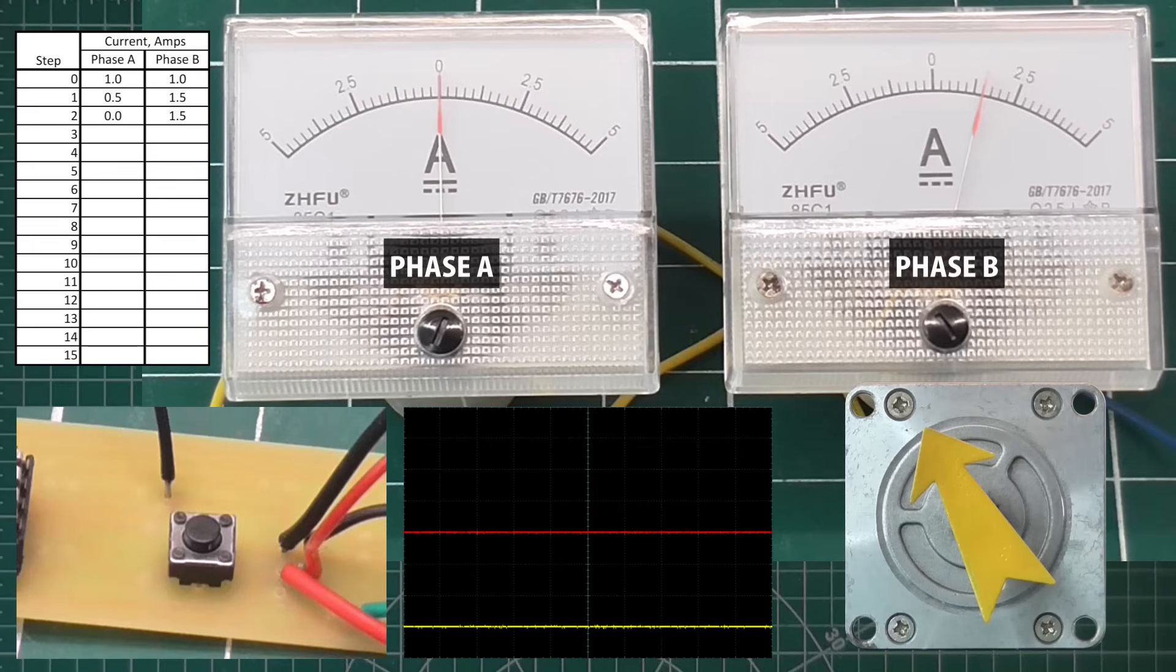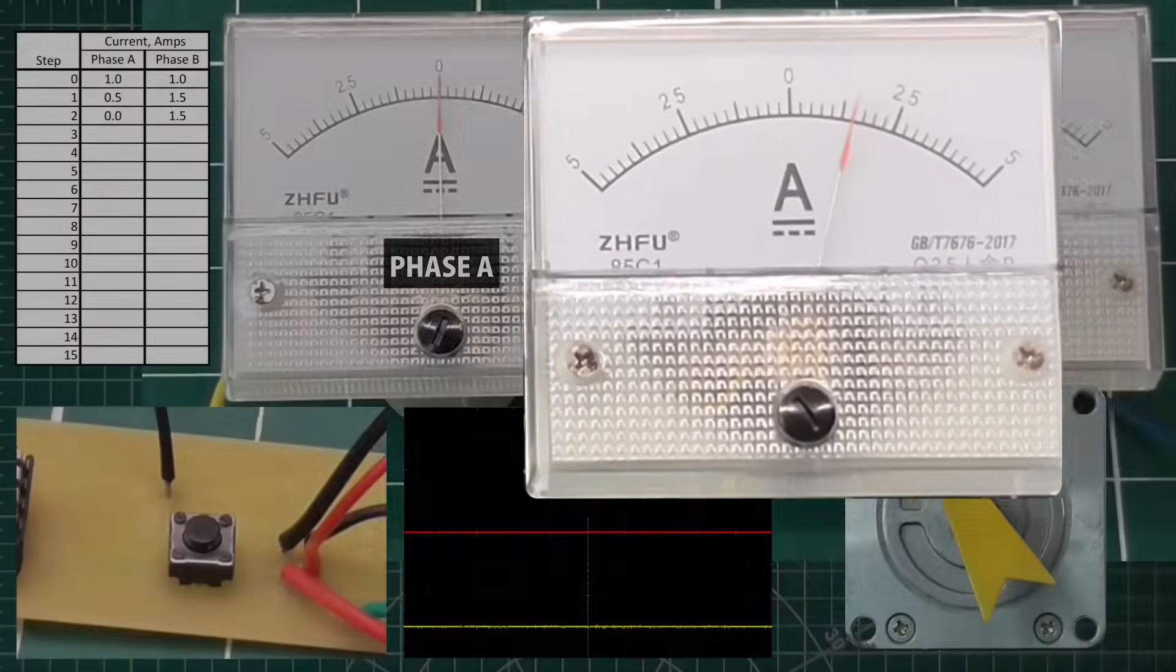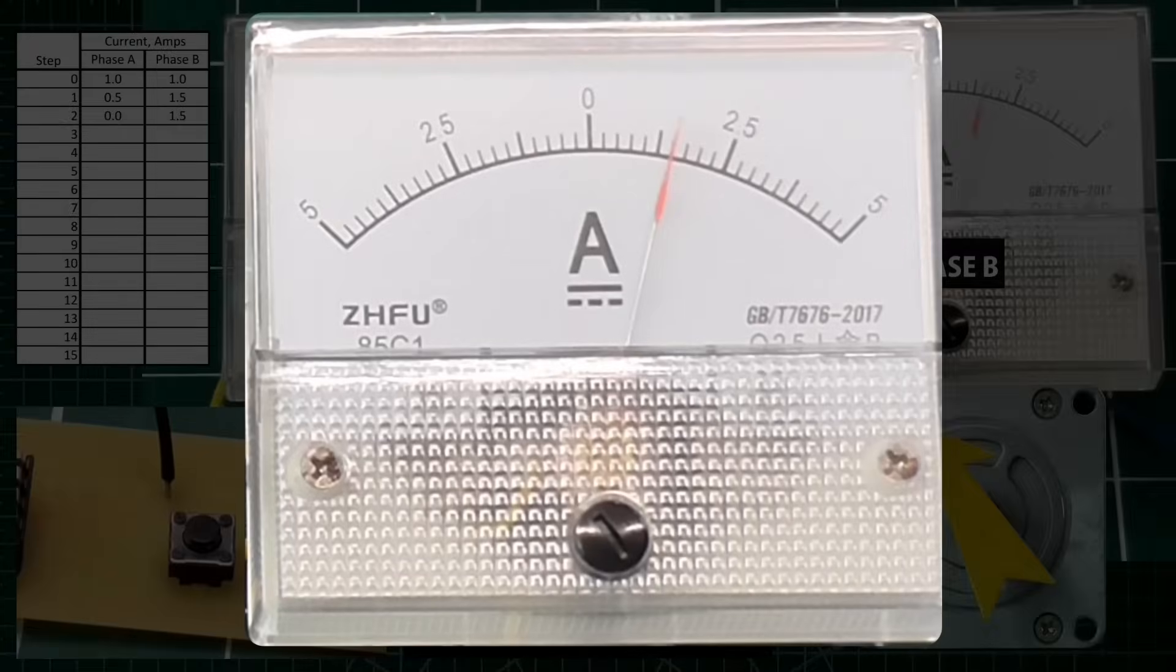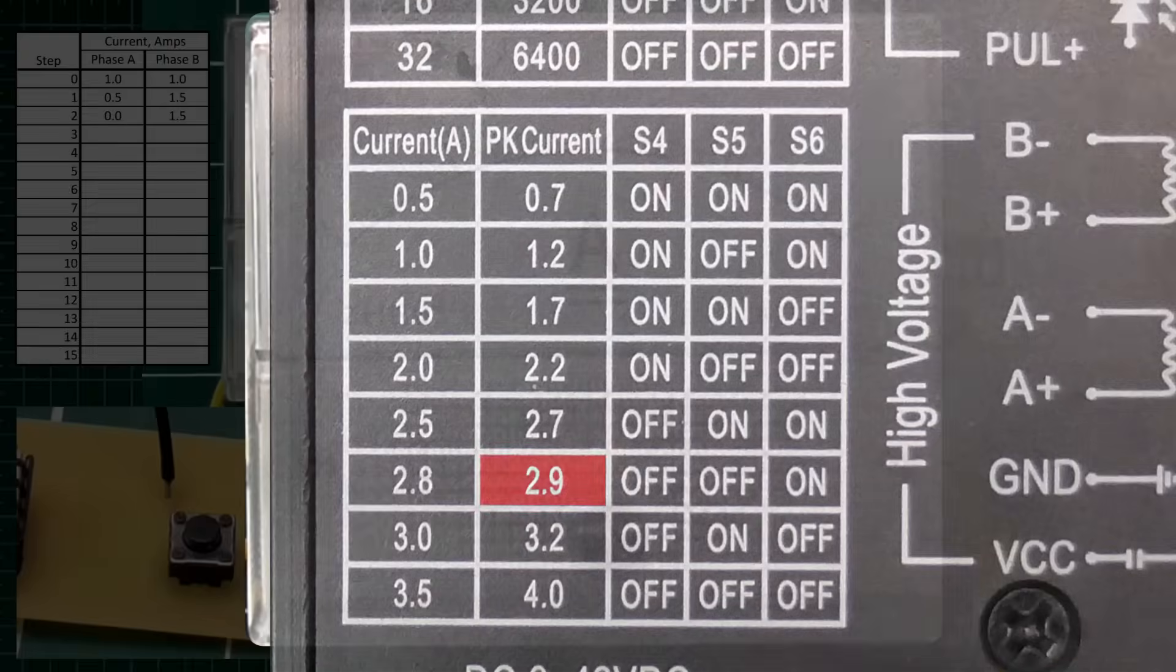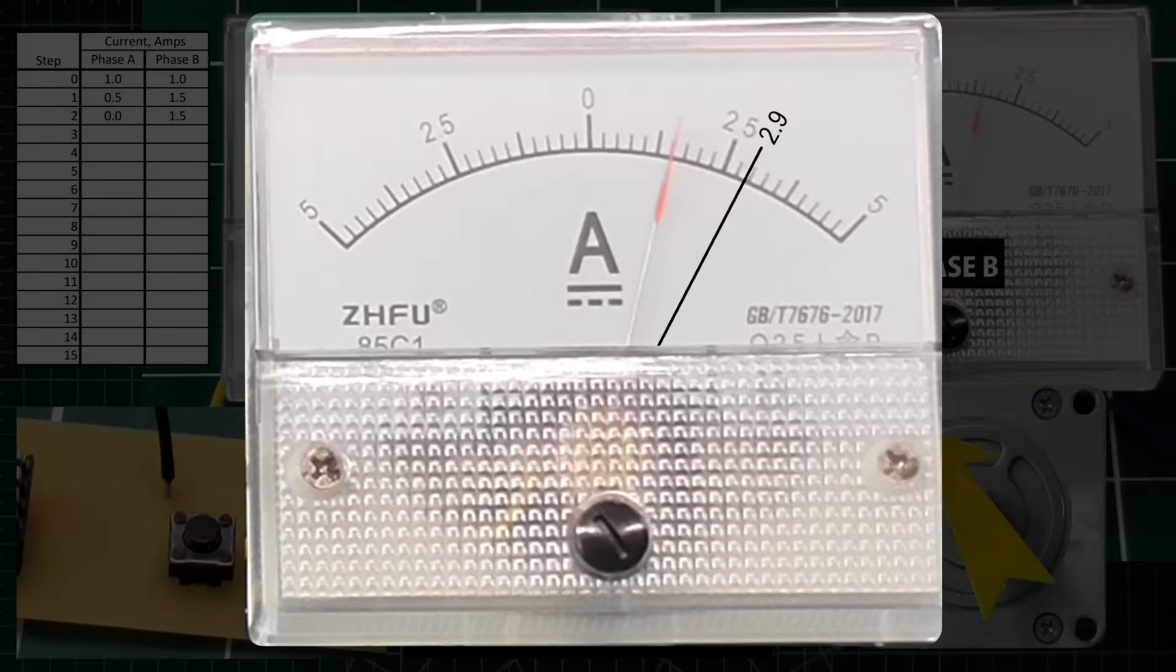But wait, let's take a closer look at that. Phase B was not constantly at 1.5 amps. The needle jumped, indicating that a higher current was applied for a fraction of a second, perhaps at the peak current indicated on the driver. But it happened so fast, this meter can't react, so we just see a blip.